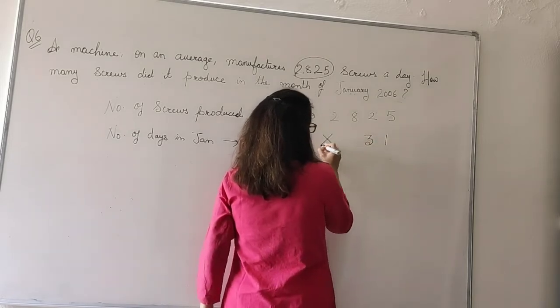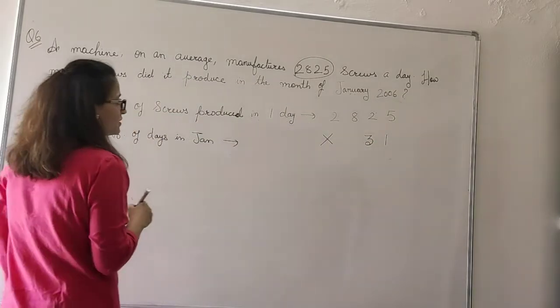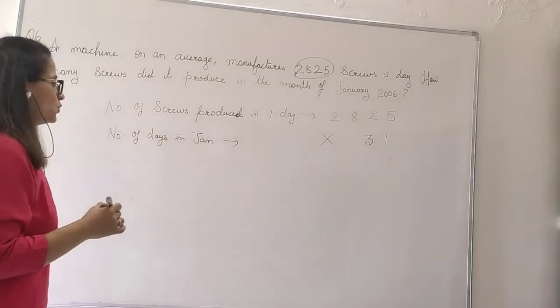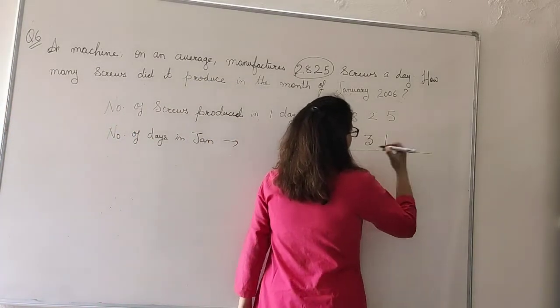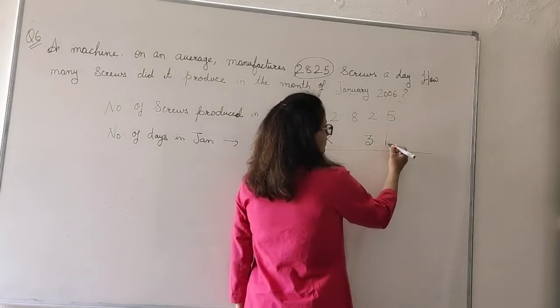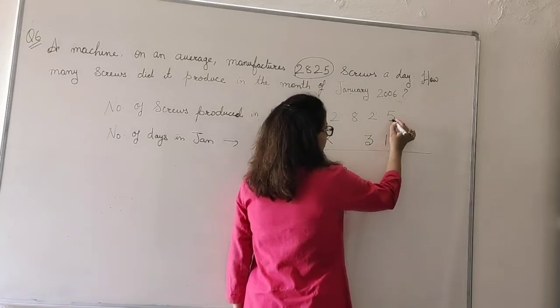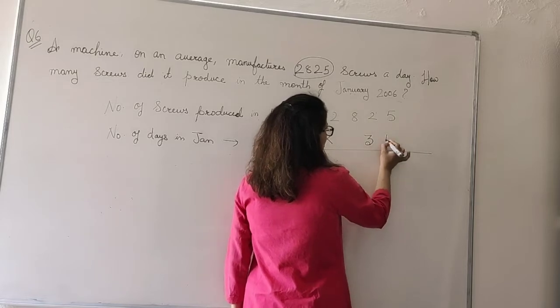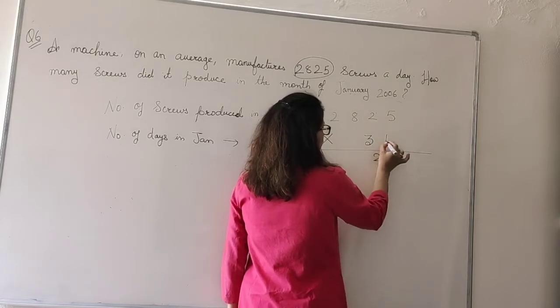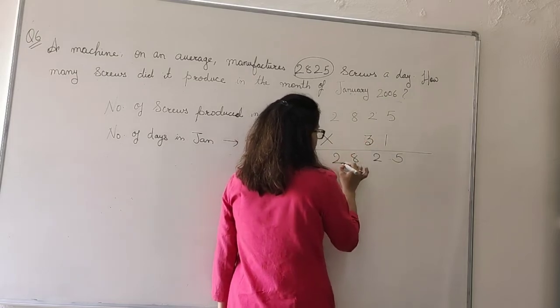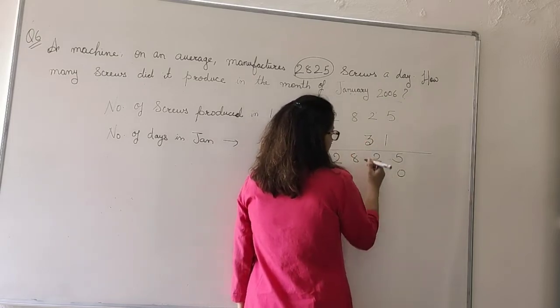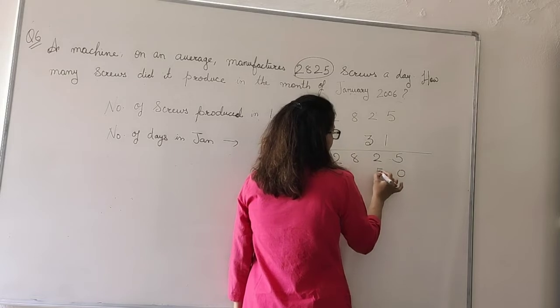Now how will we multiply? You all know multiplication. We will start from the back: 1, 5's are 5. 1, 2's are 2. 1, 8's are 8. 1, 2's are 2. Put 0. 3, 5's are 15: 5 down, 1 carry over.